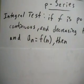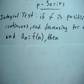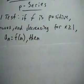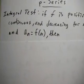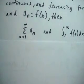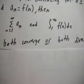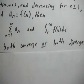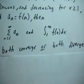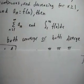The integral test is defined as: if f is positive, continuous, and decreasing for x greater than or equal to 1, and a_n equals f(n), then the series and the corresponding integral will both either converge or both diverge. Since they'll both do the same thing, you can substitute them for each other — you can take your series and plug it into an integral using the integral test because they'll have the same outcome.